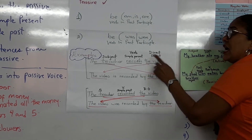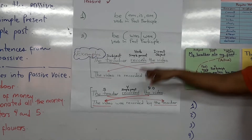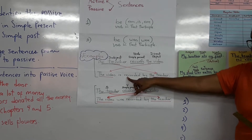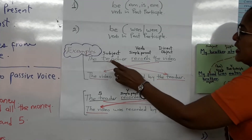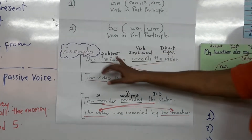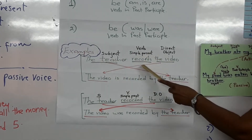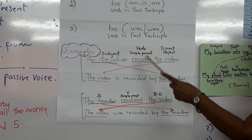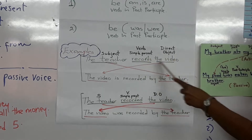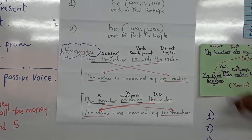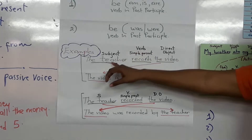So I have to change this active sentence into a passive sentence. I read this sentence, I identify the parts: 'the teacher' is the subject, 'records' is a verb in simple present in the third person, and 'the video' is the direct object.